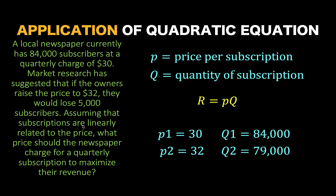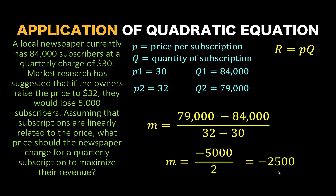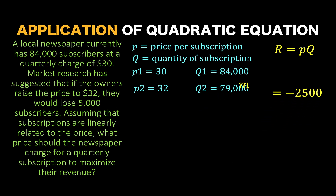Now, assuming that the subscriptions are linearly related to price, the keyword here is 'linearly related,' which gives us a signal that we can use the linear function to relate the price to the quantity. Let's recall that the slope of the line can be computed using the formula: (Q2 minus Q1) over (P2 minus P1), that is the change in Q over the change in P — the change in volume of subscription over the change in price. Solving for M, we have M equals negative 5,000 over 2, or M equals negative 2,500. So our slope is negative 2,500.